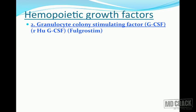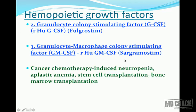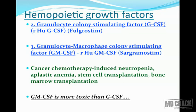The second hematopoietic growth factor is granulocyte colony-stimulating factor (G-CSF), also known as filgrastim. The third is granulocyte-macrophage colony-stimulating factor (GM-CSF), known as sargramostim. Both are useful in neutropenia caused by cancer chemotherapy, aplastic anemia, stem cell transplantation, and bone marrow transplantation. GM-CSF is more toxic than G-CSF.